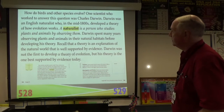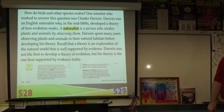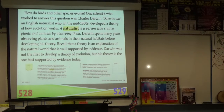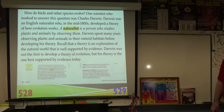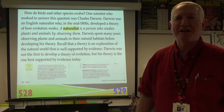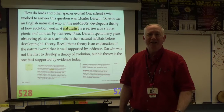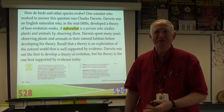One scientist who worked to answer this question was Charles Darwin. Darwin was an English naturalist who, in the mid-1800s, developed a theory of how evolution works. A naturalist is a person who studies plants and animals by observing them. Darwin spent many years observing plants and animals in their natural habitat before developing his theory. Recall that a theory is an explanation of the natural world that is well supported by evidence. Darwin was not the first to develop a theory of evolution, but his theory is the one best supported by evidence today.